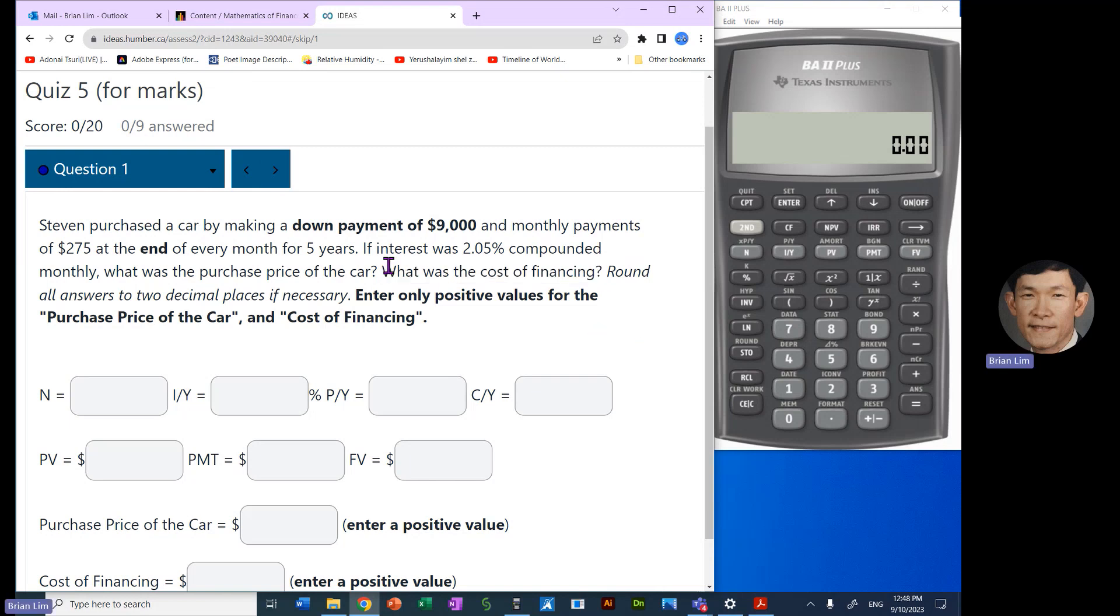Alright, so let us begin. We have a down payment and we have monthly payments. So monthly payments tells us that PY is 12. And we have interest compounded monthly, so that tells us that CY is also 12. Now the interest rate is 2.05 right here. We should copy and paste it in there, 2.05.